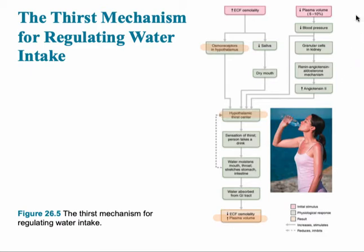Another possibility is if there's a decrease in plasma volume. This drop in plasma volume translates to a drop in blood pressure that activates the granular cells in the kidney, thus activating the renin-angiotensin aldosterone system, which leads to an increase in angiotensin 2, leading to the same result as well.